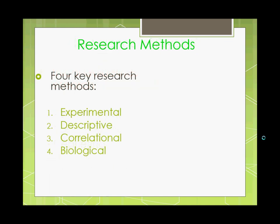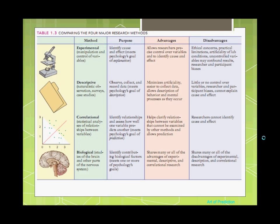I want to go over four key research methods in this lecture: experimental, descriptive, correlational, and biological — I'll be very brief on biological at the end. Here we can take a look — I'll leave this up for a little bit, you can pause it and spend more time with it — these are the four primary research methods, the purposes of each, and some advantages and disadvantages. I think it's an excellent table if you want a quick reference of the four primary research methods.